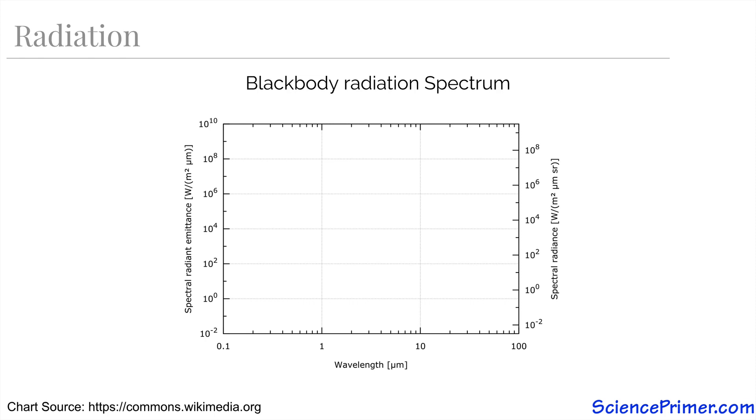On the x-axis is wavelength. It is a log scale with low energy, long wavelength microwave radiation on the right and higher energy, shorter wavelength, ultraviolet light on the left. This puts infrared energy, what we perceive as heat, right in the middle of the chart and higher energy visible light to the left of that.